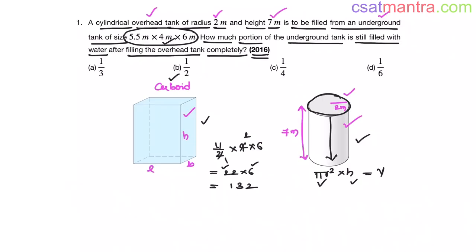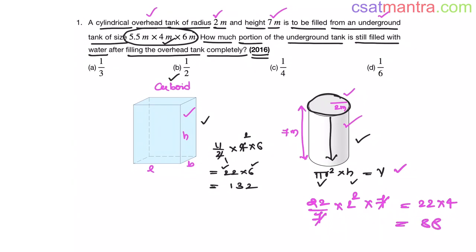Finding the volume of the cylinder: Pi is 22 by 7, R is 2, so R square is 4, and H is 7. The 7 gets cancelled out, leaving 22 into 4, which is 88. So the cuboid volume is 132 cubic meters and the cylinder volume is 88 cubic meters.